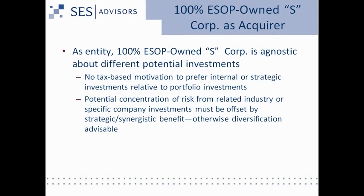We might have a diversified portfolio sitting behind our concentrated investment. In the large-scale financial planning of a 100% ESOP-owned S-Corporation, we want to be mindful of repurchase obligations out in the future, and corporate finance diversification might help there. So the things we're typically looking for as a 100% ESOP-owned S-Corporation are investments with a strategic or synergistic benefit. Otherwise, if we're investing neutrally for cash flow, we might decide that a neutral cash flow investment might be better served by investing in an industry or asset class different from our company already.